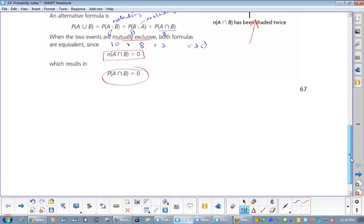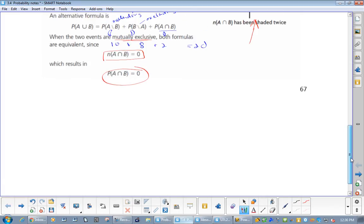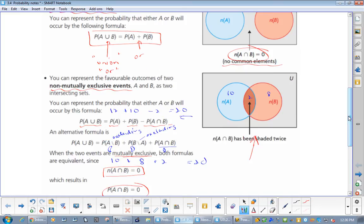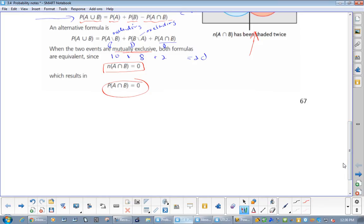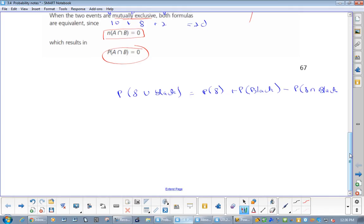Now, the new formula that we're gonna be learning today is, we're gonna put probabilities instead. So let me do the probability of 8 or black. This is what's the probability of 8, plus the probability of black, minus the probability of 8 and black. So instead of when we're doing numbers, we're just counting them. Now we always have to put them over the total. So what's the probability of picking an 8? How many 8s are there? 4 out of 52.